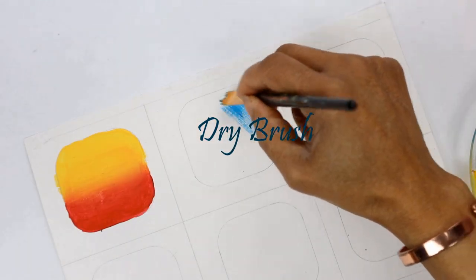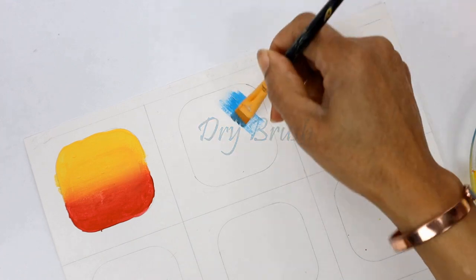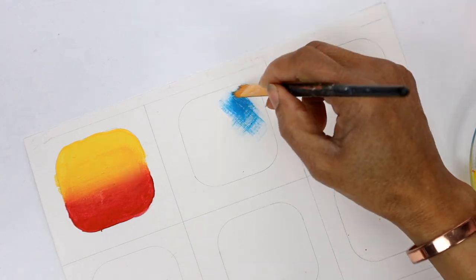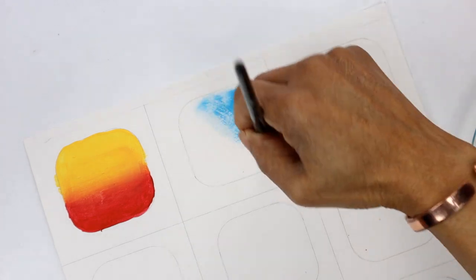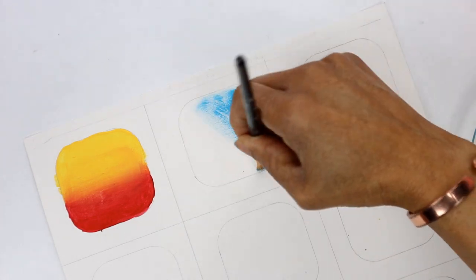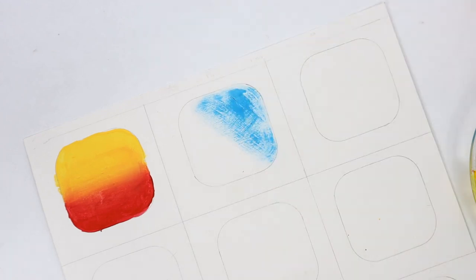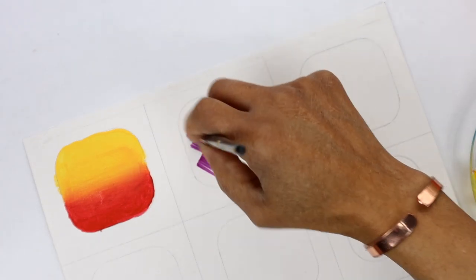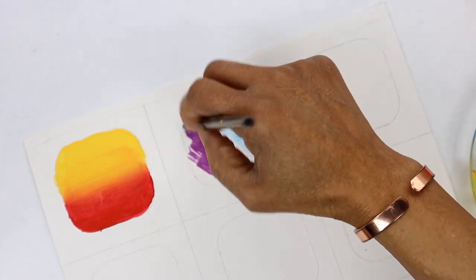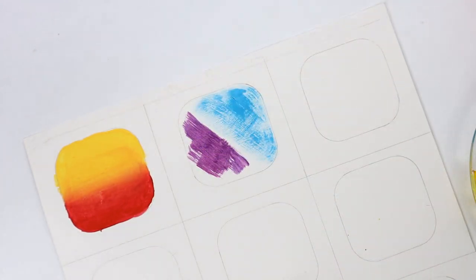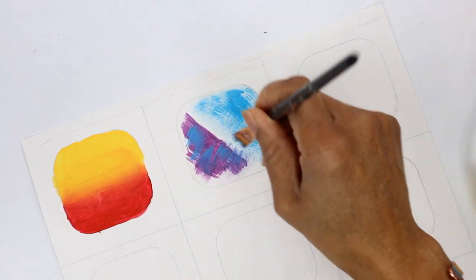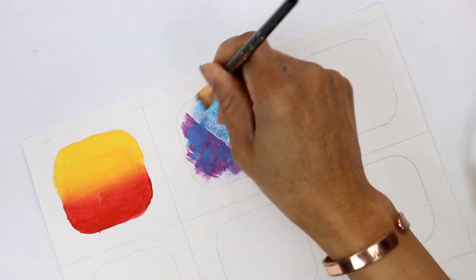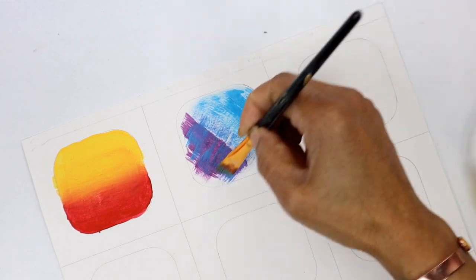The next technique we'll be doing is dry brush, where we use very little paint on our paint brushes to create a nice light sort of textured stroke. Look at the texture on that. It gives us a kind of rustic feel. The less paint you have on your brush, the lighter the texture will be. You can actually do dry brush on top of another color and create beautiful textures and patterns.